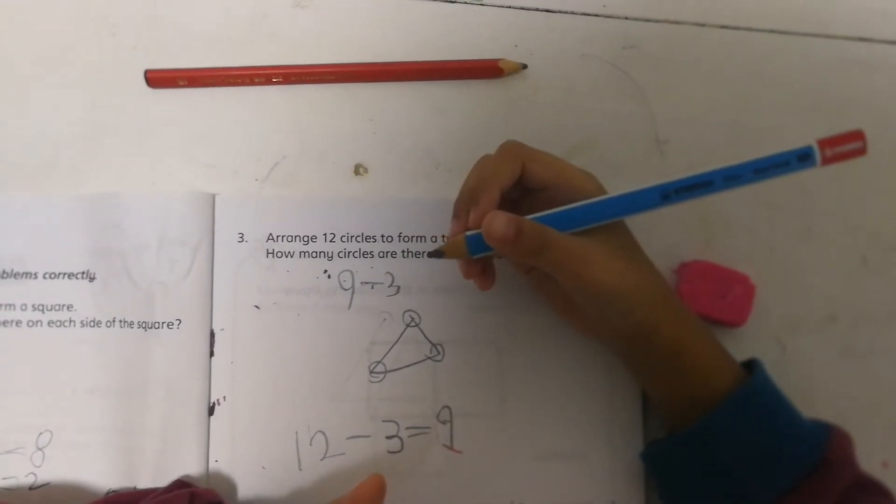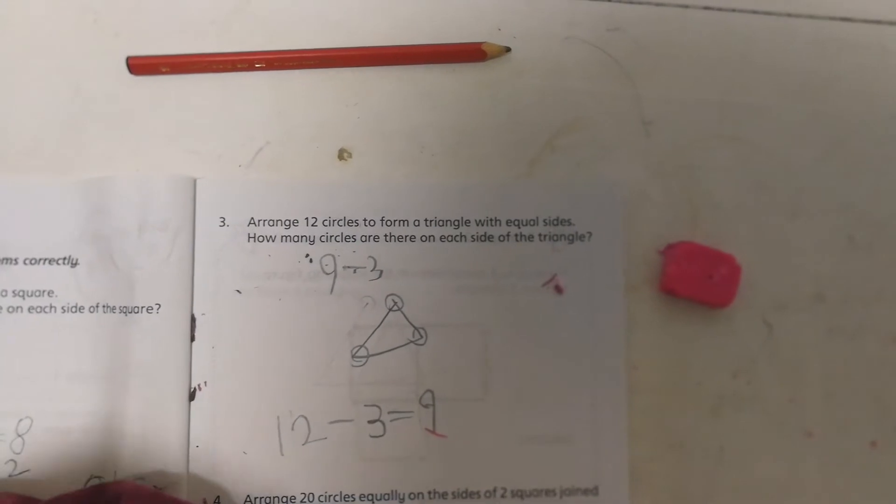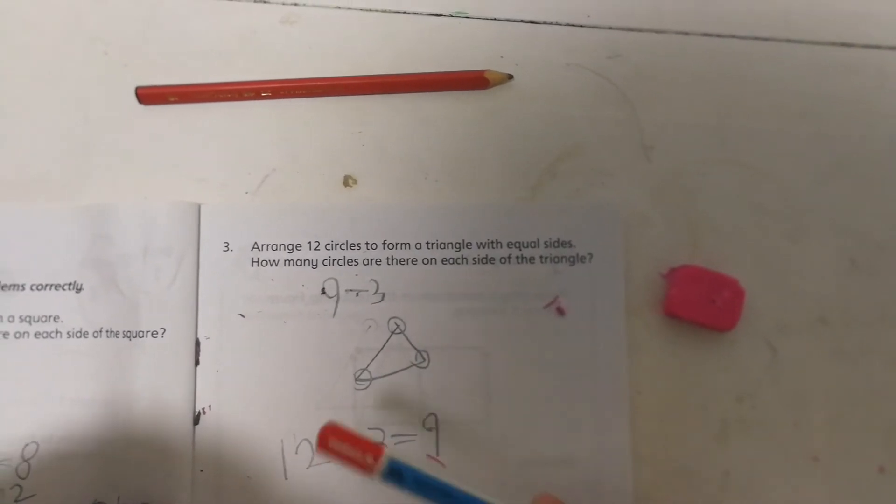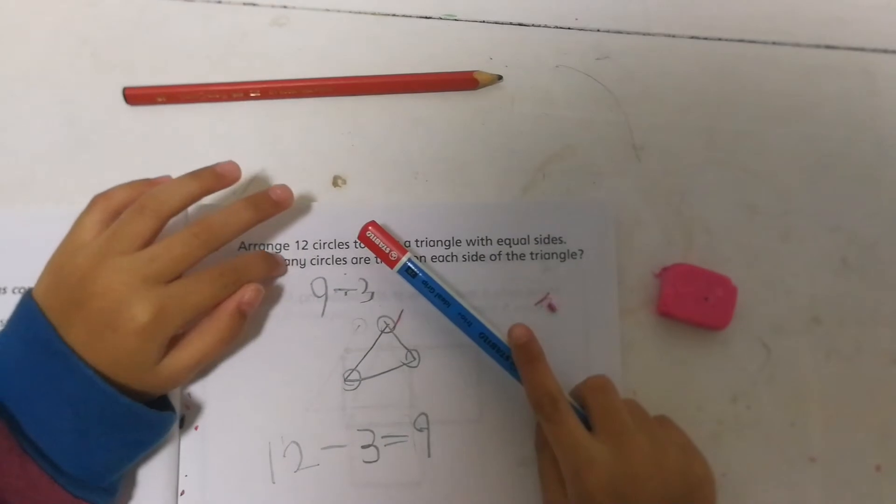Okay, why do we divide by 3? Because I used the 3. Because you used the 3? No, because I'm doing it to 3 sides. Oh, okay. There's 3 sides. Very good.